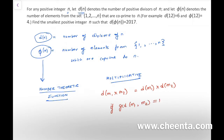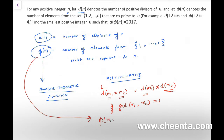Basically, if you multiply the numbers and then apply the function, or if you apply the function separately and then multiply, you get the same result. That is also true for φ(n): φ(m₁·m₂) = φ(m₁)·φ(m₂).